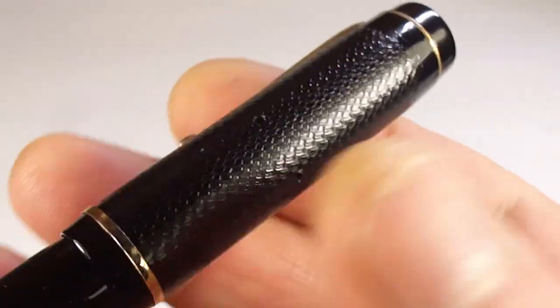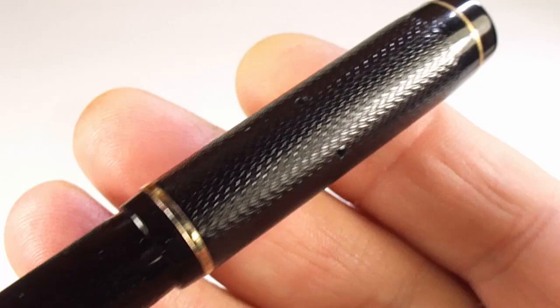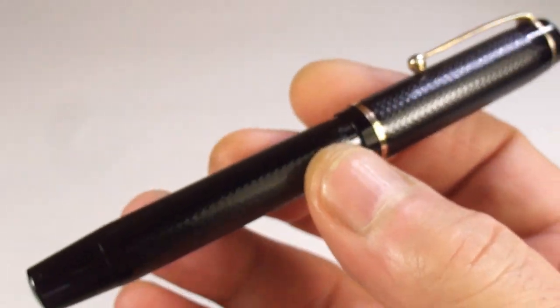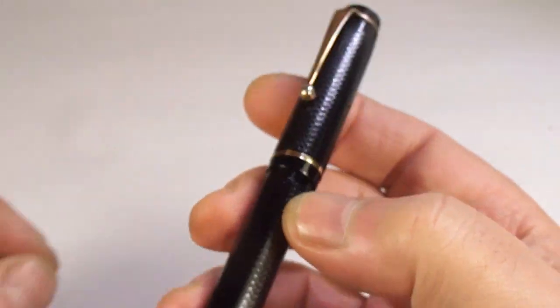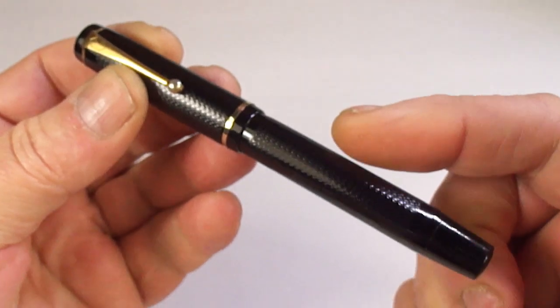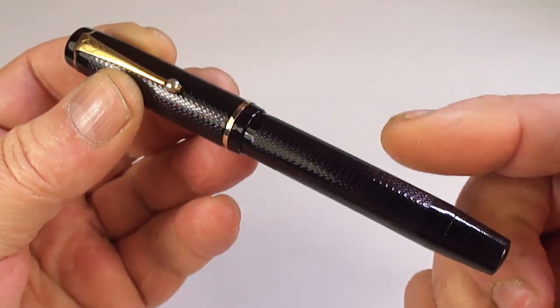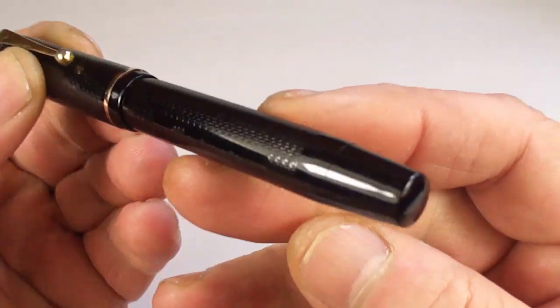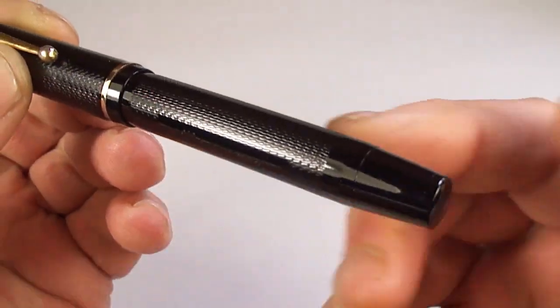Take a look at that lovely chasing pattern there. The chasing is lovely and crisp. As you can see there, it's a very handsome fountain pen. Now, the Mentmore auto flows, they came not only as in this one here, you can see it's got a blind cap.